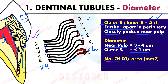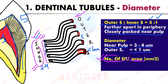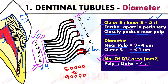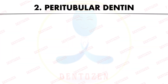The number of dentinal tubules per unit area is more on the inner side — the density of tubules is more near the pulp compared to the outer side. This ratio is four to one, and there can be about 50,000 to 90,000 tubules near the pulpal area. This density is more in the crown portion compared to the root portion.